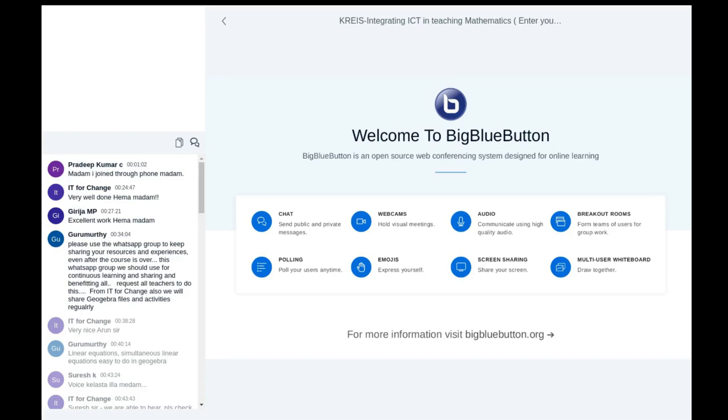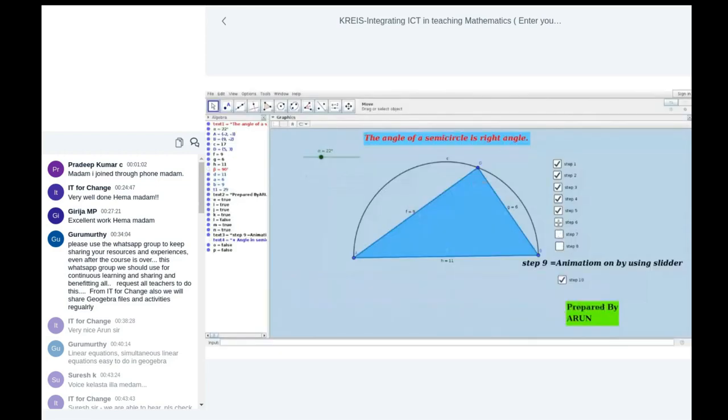The angle in a semicircle is 90 degrees. Very nice sir. I'll share my experience with the GeoGebra file.